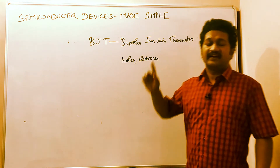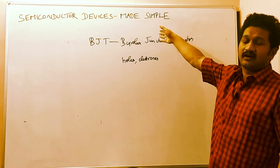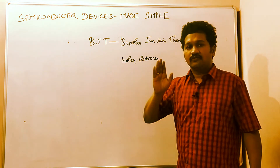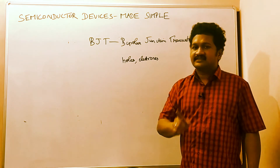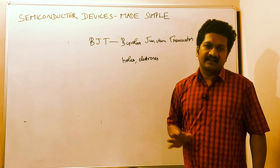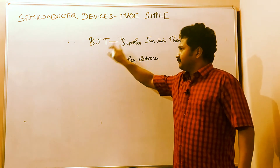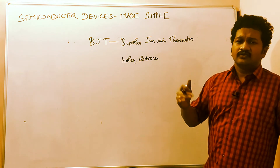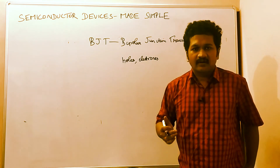FET is a unijunction transistor where there is only one charge carrier involved in the production of current. BJT is a Bipolar Junction Transistor. You may ask whether diodes are bipolar — yes, diodes are bipolar.